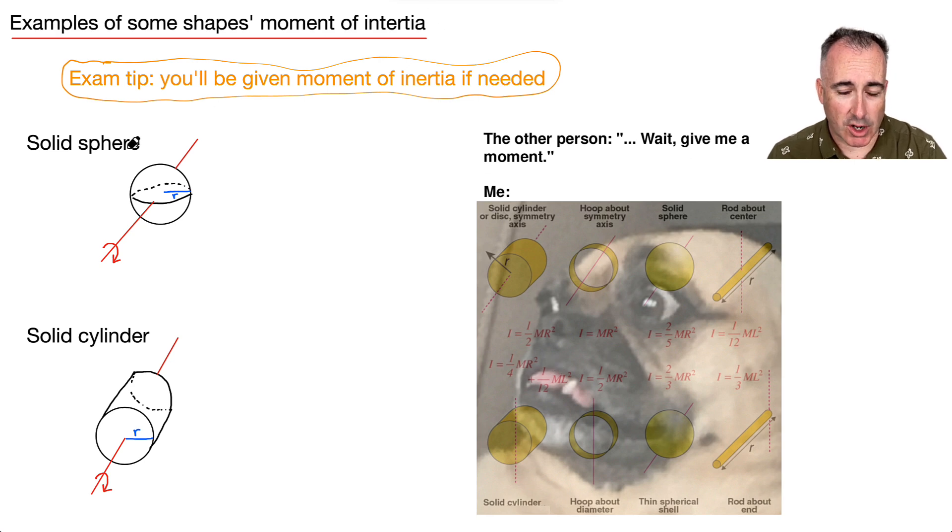So for example, for a solid sphere going around its axis here, I is going to be 2/5 mr squared. Whereas this one here will be different. A solid cylinder that's rotating about this axis here, that'll be 1/2 mr squared. So it's different.